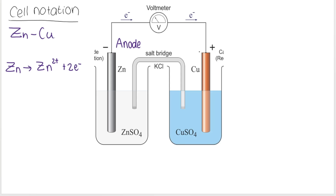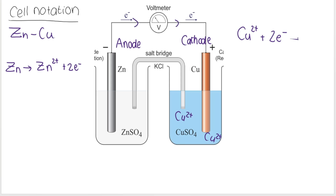The copper half cell was the cathode half cell, and reduction takes place at the cathode. The Cu²⁺ ions contained in the electrolyte solution accept the two electrons that travel from the anode half cell to form solid copper, which coats the cathode.